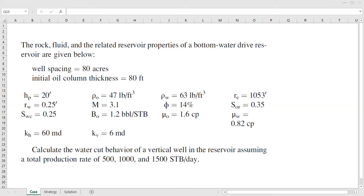Alright, we open with the case. The rock fluid and related reservoir properties of a bottom water drive reservoir are given below. Water drive reservoir can be bottom water drive or edge water drive. In this case we have bottom water drive. We have well spacing of 80 acres and initial oil column thickness of 80 feet. The perforation interval HP is 20 feet, wellbore radius 0.25 feet, and connate water saturation 25 percent.